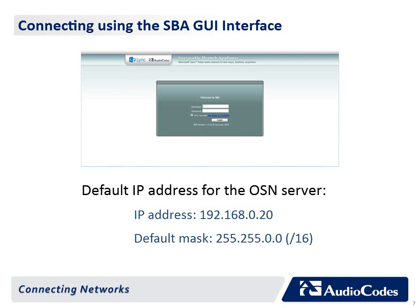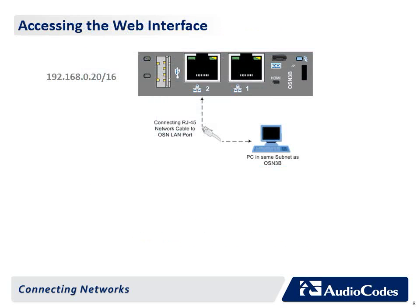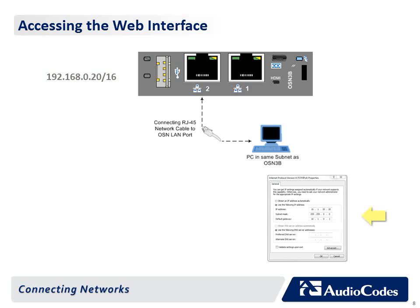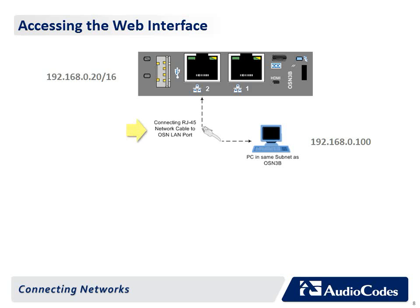Note that the IP address of the OSN server is the IP address of the SBA module. To access the web interface of the SBA, change your computer's IP address so that it is in the same subnet as the default IP address of the OSN server hosting the SBA. Using a network cable, connect the computer to the LAN port on the Mediant 1000B SBA OSN module as shown in the figure.